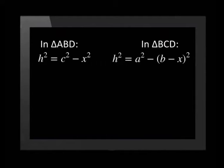Since H is common to both triangle ABD and BCD, we can say that C squared minus X squared is equal to A squared minus, in brackets, the square of B minus X.